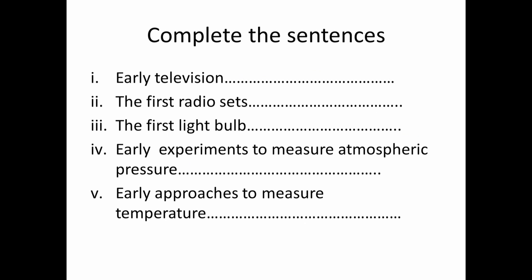I want you to do some thinking about how major inventions were invented and what they looked like, using past tense. Please compare your answers with your friends and classmates. Topics include: early television, the first radio sets, the first light bulb, early experiments to measure atmospheric pressure, and early approaches to measure temperature. Complete each one in just one line using past tense.